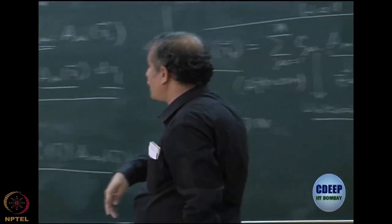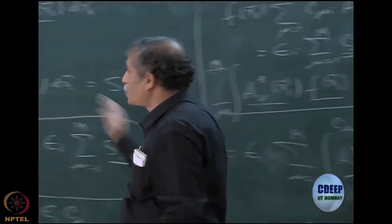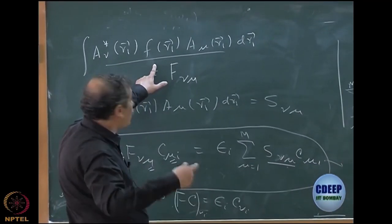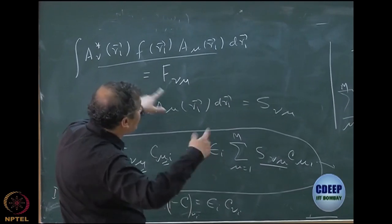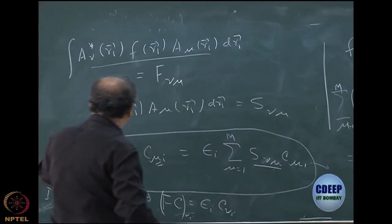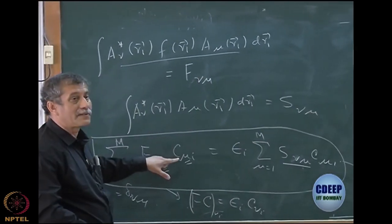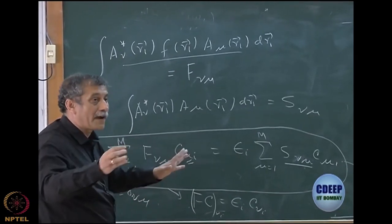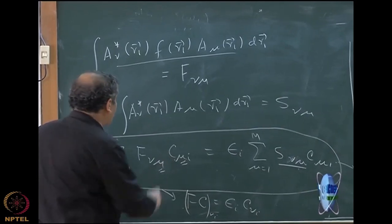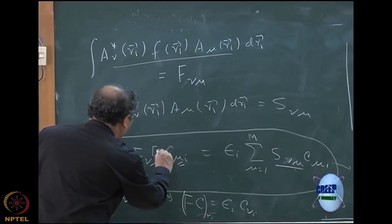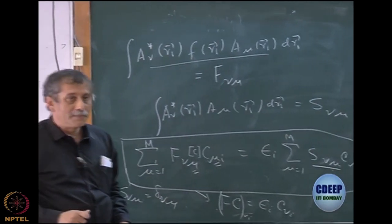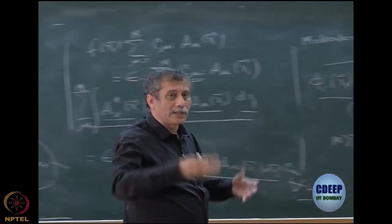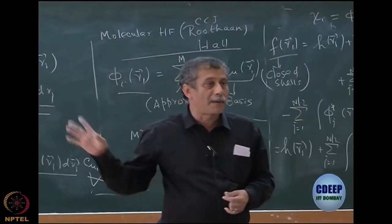So once I construct this, this has to be solved and you will very easily see that because of the fact that the f has spin orbitals or space orbitals which are again in terms of basis, this matrix will now depend on coefficients. So again the SCF problem will come back. This is not a matrix defined by itself. So this matrix is actually a function of c because of the fact that the f contains space orbitals.